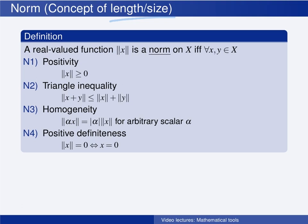First, the length of an element must always be larger than or equal to zero. And we can jump directly to the fourth condition: the length of an element being zero is equivalent to this being the zero element in the set. This means that if the length of an element is zero, then this must be the zero element. No other elements have zero length, and together with the first condition, it means that the length of all elements other than the zero element have to be strictly positive.